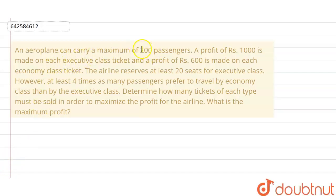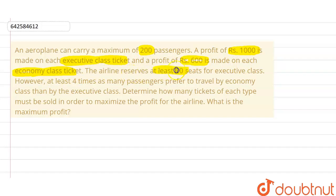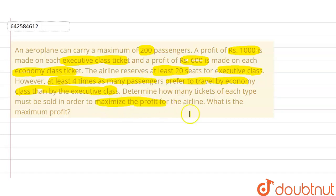An aeroplane can carry a maximum of 200 passengers. A profit of 1000 rupees is made from each executive class seat and 600 rupees from each economy class ticket. The airline reserves at least 20 seats for the executive class. At least four times as many passengers prefer to travel economy class than executive class. We need to determine how many tickets of each type must be sold to maximize profit.